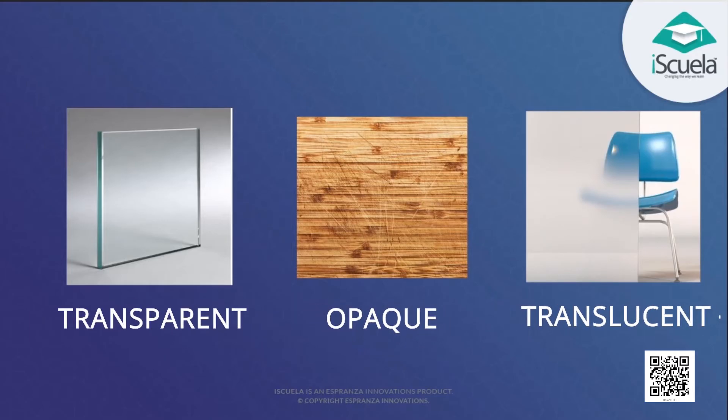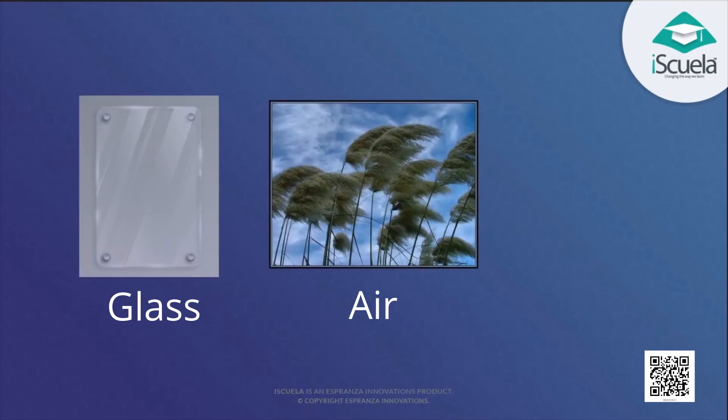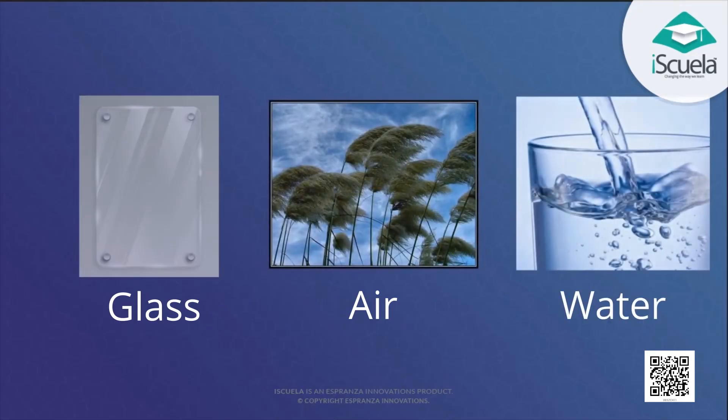The objects which allow the light to pass through them completely are called transparent objects. When light falls on a transparent object, it passes through the object to the other side and this is the reason that we are able to see through transparent objects. Glass, air and water are some examples of transparent objects.